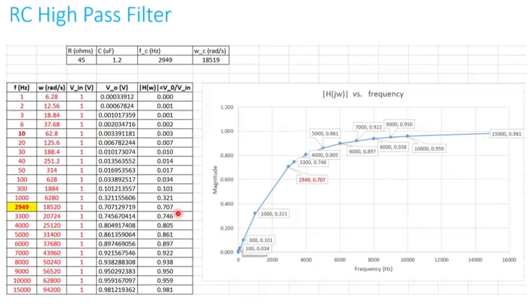As you can see, before the cutoff frequency the output voltage is close to zero. But once it reaches the cutoff frequency, it jumps to 0.707, which is 1 over root 2. Then it keeps increasing, so at 15,000 hertz...